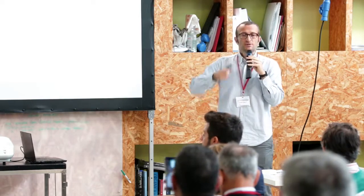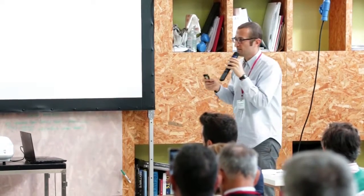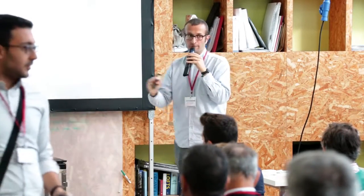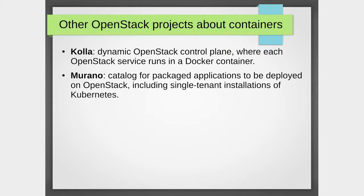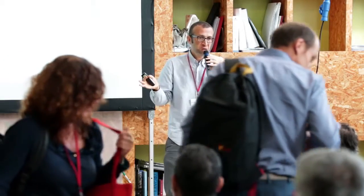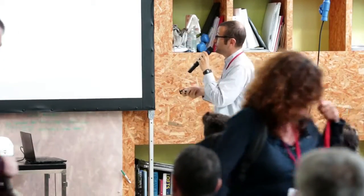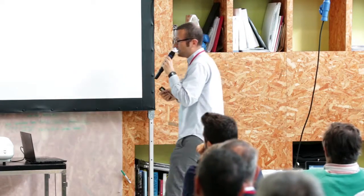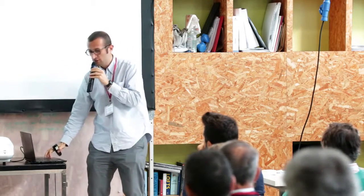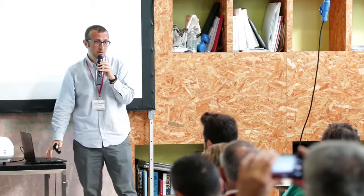There are other projects that deal with containers in OpenStack. Kolla allows deployment of OpenStack so that the control plane is dynamically deployed with each OpenStack service running in a container — so it's OpenStack on containers, which is out of scope for us. Murano is a catalog for packaged applications; among these applications there is Kubernetes as a single-tenant installation. These are two main projects that deal with containers but are out of scope for us.